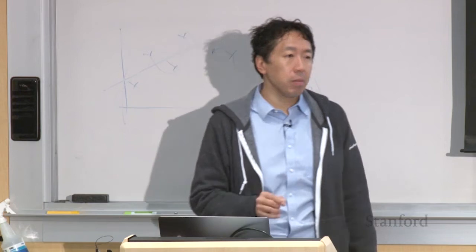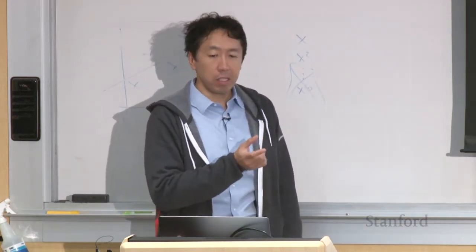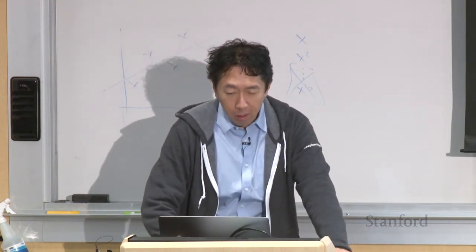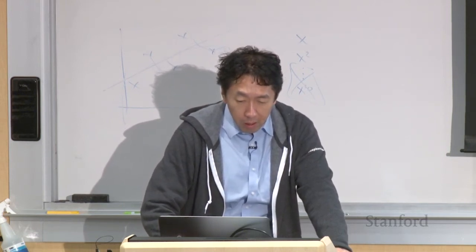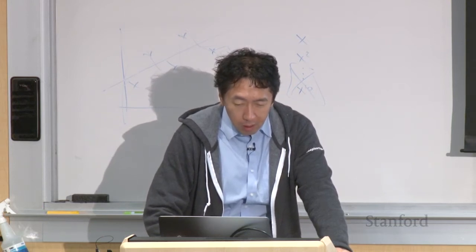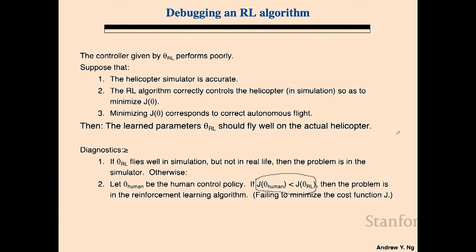This first diagnostic tells you to work on improving simulation when there's a big mismatch between simulation performance and real-world performance. Second — this is actually very similar to the diagnostic we used on the spam Bayesian logistic regression versus SVM example. We measure: take the cost function J that reinforcement learning is told to minimize — squared error — and see if the human achieves better squared error than the reinforcement learning algorithm. We measure the human's performance on this squared error cost function and see which one does better. There are two cases: that equation will be either less than, or greater than or equal to.